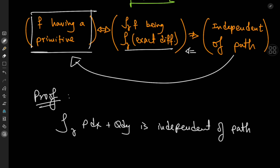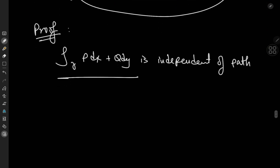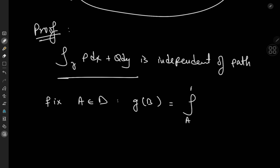Let's assume this integral is independent of path. We have functions p and q as continuous complex-valued functions on some domain d. The first thing we want to do is fix some point a in that domain and define a function g(b) as the integral from a to b of p dx + q dy.